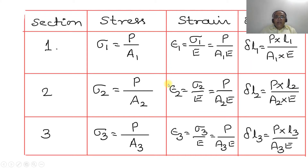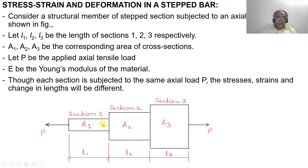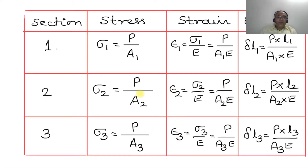For section 2, the applied load is again P. The stress sigma2 = P/A2. The strain epsilon2 = sigma2/E = P/(A2·E). Since epsilon2 = delta_L2/L2, the extension delta_L2 = P·L2 / (A2·E).